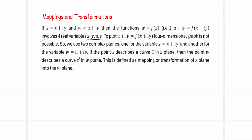Now if we have to plot the graph of u + iv = f(x + iy), we would require a four-dimensional graph, but that is not possible. To overcome this difficulty, we will be using two complex planes — one complex plane for z = x + iy and one more complex plane for w = u + iv. Then if a point z describes a curve C in the z-plane, this transformation will have the point w describe a curve C' in the w-plane. This is defined as a mapping or transformation of the z-plane into the w-plane.